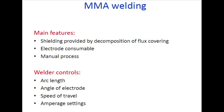The main features of MMA welding: shielding is provided by decomposition of the flux covering on the electrode. It is a manual process using a consumable electrode. The flux covering provides the shielding, giving good weldability and strength. The welder controls four things: arc length, angle of electrode, speed of travel, and ampere setting.